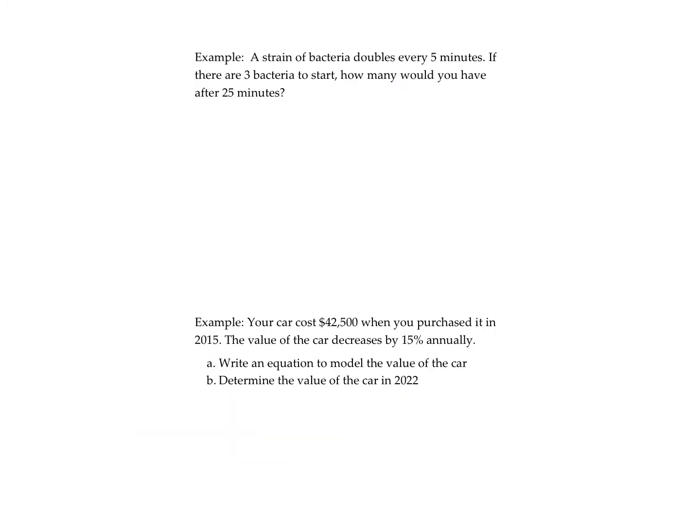In this example, we have bacteria that doubles every five minutes. There are three to start. How many would you have in 25 minutes? We're going to use the exponential model. The starting amount is three bacteria. The common ratio—well, it's doubling, so two.